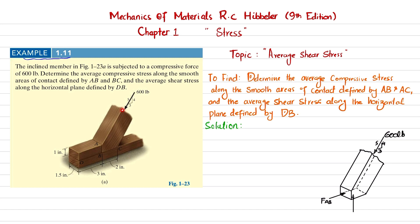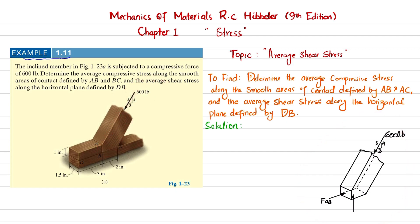Let's start with the solution. First, if we remove one portion and represent only the element where the 600 pound load is applied, we can draw the free body diagram. When you remove the second portion, you can see there is a compressive force FAB acting on side AB and a compressive normal force FBC acting upward. Both are compressive. We will find FAB and FBC using equations of equilibrium.